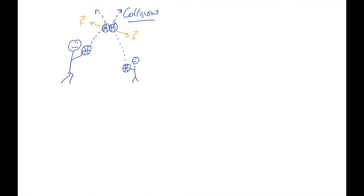This force is big enough that it's the one dominating how this basketball is moving. I'm saying that because there's another force acting on the basketball at the same time — there's a weight force going straight down, same thing on this one. But compared to this force making these basketballs bounce off of each other, the weight force is really tiny. So when we talk about collisions, we're talking about a situation where the collision force is so large that we can ignore the others.